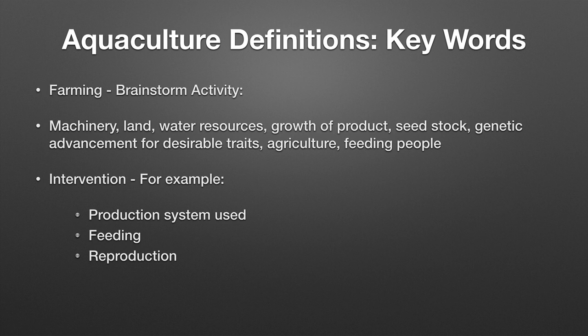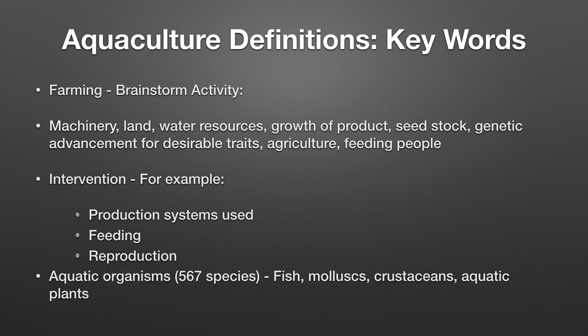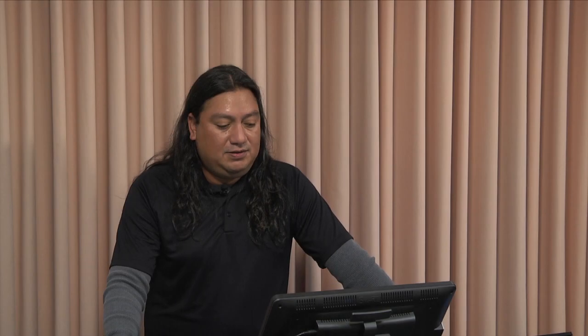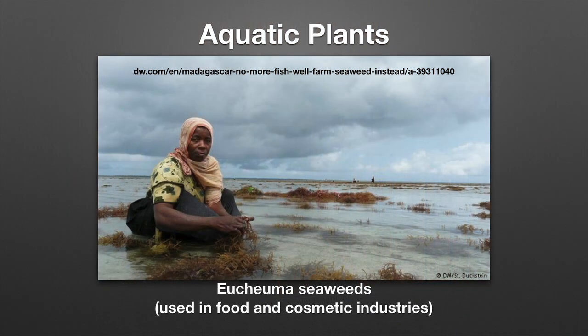We use different production systems to increase control over reproduction, formulate feeds specific to each species, and manage the farming of aquatic organisms. This includes fish, mollusks, crustaceans, and aquatic plants. It is important to know that aquaculture is not only about fish or shrimp — it involves 567 species being produced in the world through aquaculture.